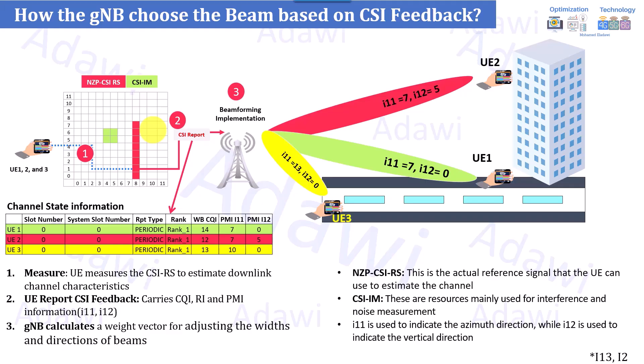The number of ports matters because if you configure 32 ports, some users may only support a maximum of 8 or 16 CSI-RS ports. The network or vendor might support dynamic adaptation — if the user doesn't support 32, the network can dynamically transmit only 8 CSI-RS resources, since CSI-RS is a dedicated per-user resource. So the first thing to check in UE capability is the maximum number of supported CSI-RS ports and the supported codebook panel type — type 1 or type 2.